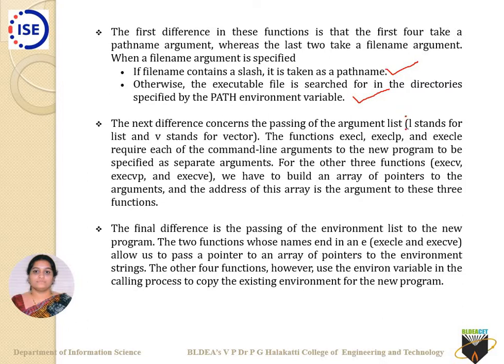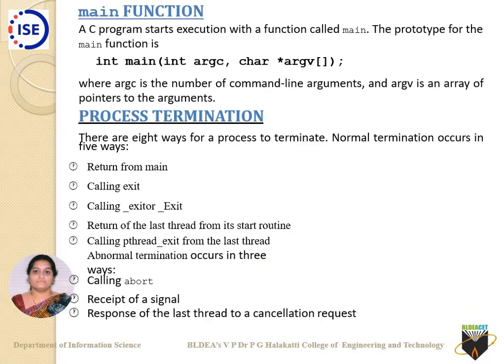L stands for list and V stands for vector. The difference is that list specifies a defined number of values, whereas vector means it can be variable — it can be more or fewer arguments. The final difference is that two functions — execle and execve — take the environment list as a third argument.